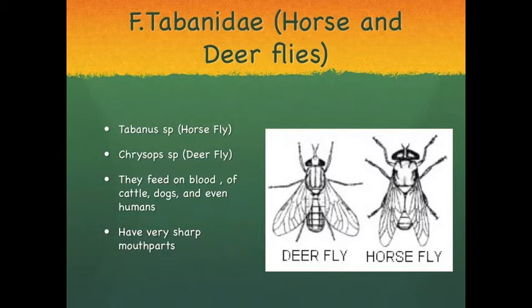The third family that will be discussed is family Tabanidae, which includes the horse fly and the deer fly. When looking at the structure of the flies, it is noted that horse flies are considerably larger than deer flies — heavily bodied with huge heads — and from three-quarters of an inch to an inch longer than the deer flies.